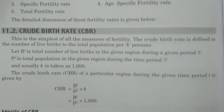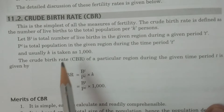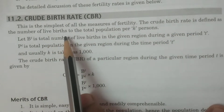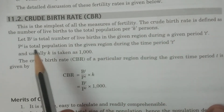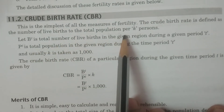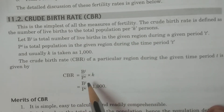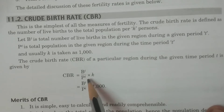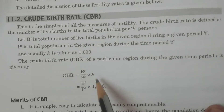Now we discuss each one by one. The Crude Birth Rate (CBR) is defined as the number of live births relative to the total population. CBR is the ratio of the number of live births (BT) to the total population (PT), multiplied by K, expressed per K persons. It is called a rate because we multiply by K.